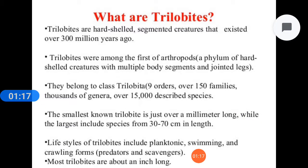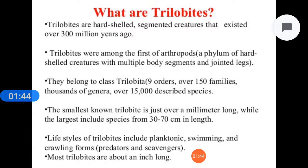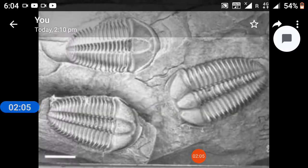Trilobites are hard-shelled, segmented creatures that existed over 300 million years ago. They were among the first of the arthropod phylum. Trilobites belong to class Trilobita, and the smaller non-trilobites are just over a millimeter. The lifestyle of Trilobites includes planktonic swimming and crawling forms; most Trilobites are about an inch long.